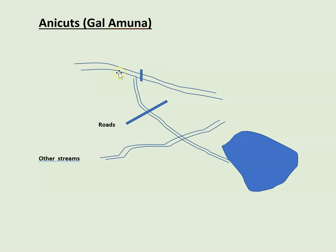Permanent rivers — like Malwatu Oya, Kalawewa, and Kala Oya — don't dry out. So the idea came to build an anika or galamuna on these rivers and construct canals. The longest canal built at that time is the Alisara canal, mentioned in the Mahavansa, started by King Vasabha and later expanded by King Mahasena.